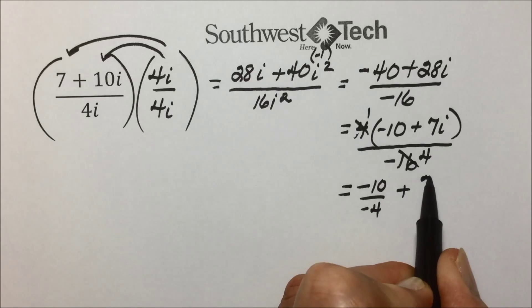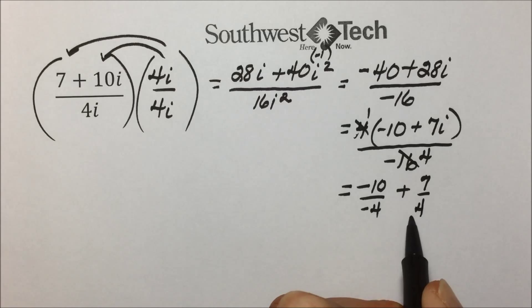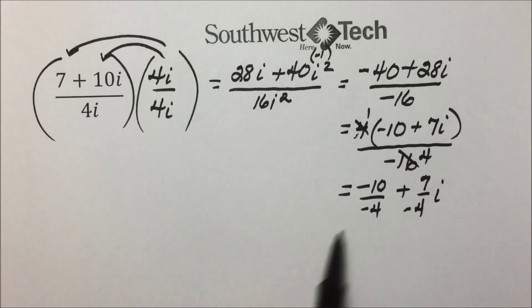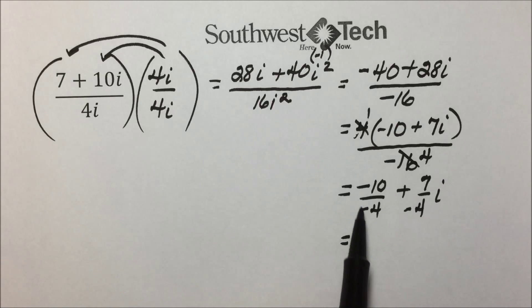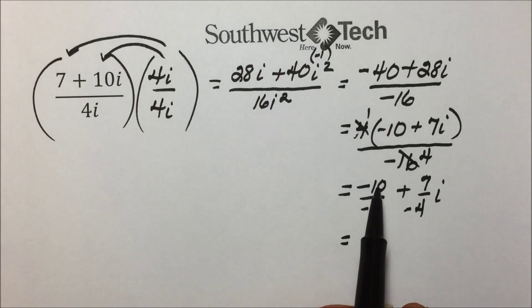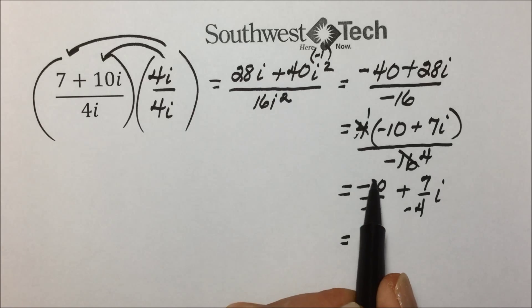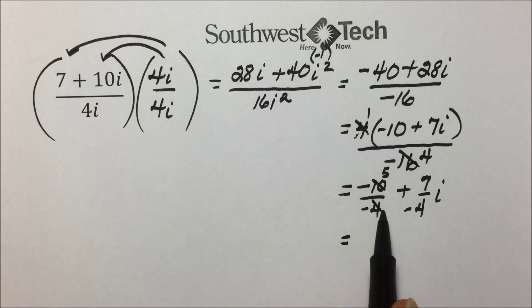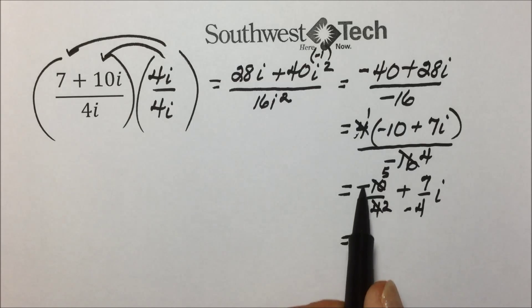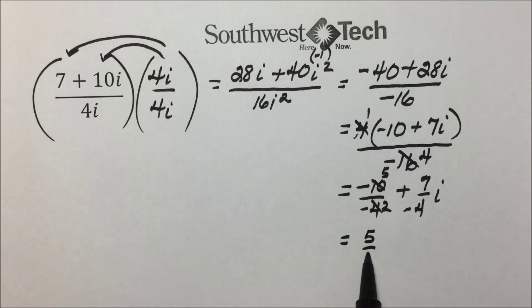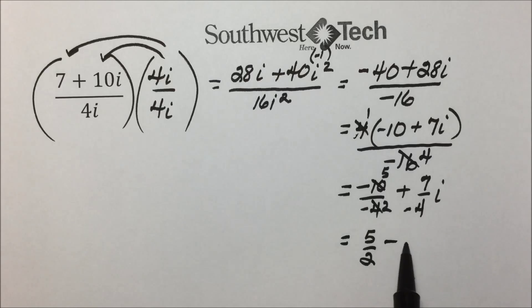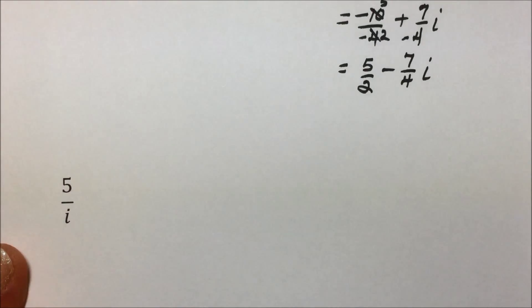Expressing our answer in the form a plus bi, we put each term over the common denominator of negative 4. A negative over a negative is positive, so we get 10 fourths, which can be reduced further: dividing top by 2 leaves 5, and denominator by 2 leaves 2, giving us 5 halves. We can migrate the negative in the denominator, giving us a subtraction: 5 halves minus 7 fourths i for our final answer.